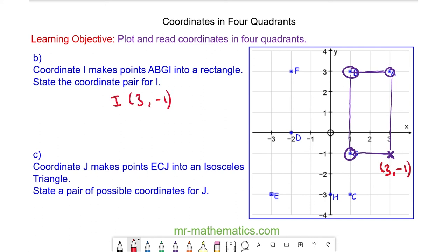Do you want to try and work out a possible pair of coordinates for J that makes E, C, J into an isosceles triangle? You can pause the video and resume it when you're ready.